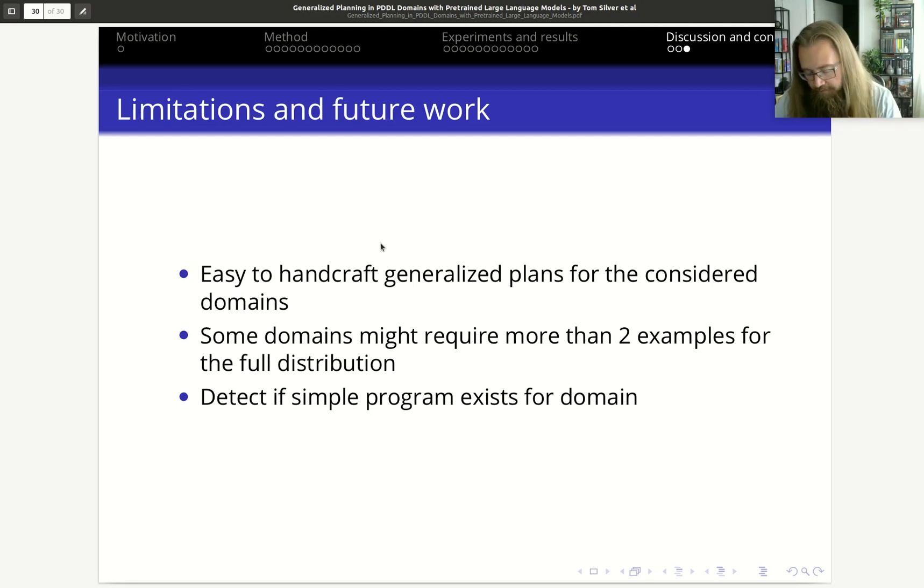I also had a comment from a colleague who said that it might be the case that these tested domains are so commonly used that there are generalized plans in the training data for the language model, and it just reuses those, which could be why when the names are changed, it gets so much worse performance. It's because it just retrieves a program that was already made previously, or somebody has created a program. That's why it gets these good performance or worse performance when the names are changed.